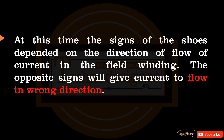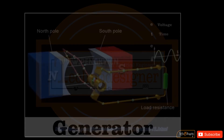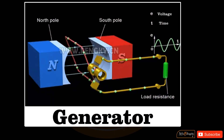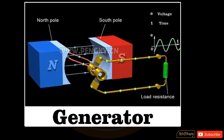The polarity of the pole shoes depends on the direction of flow of current in the field winding. The opposite polarity will cause current to flow in the wrong direction, which in turn will affect the electric field current level.